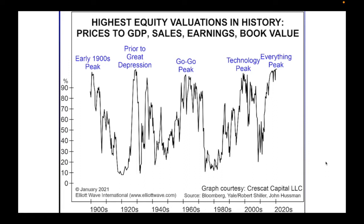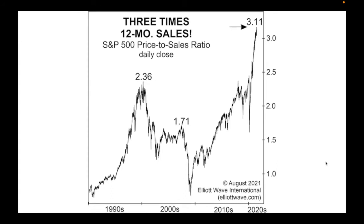Here are Bob Prechter's charts. This is an index of stock market prices to GDP — gross domestic product — which is the measure of the economy in a country, along with sales, earnings, and book value. What we're seeing is the highest equity valuations in history, compared to the early 1900s peak, 1929 just before the Great Depression, the 1960s go-go peak, the technology peak in 2000, and now what Bob Prechter and others are calling the 'everything peak.'